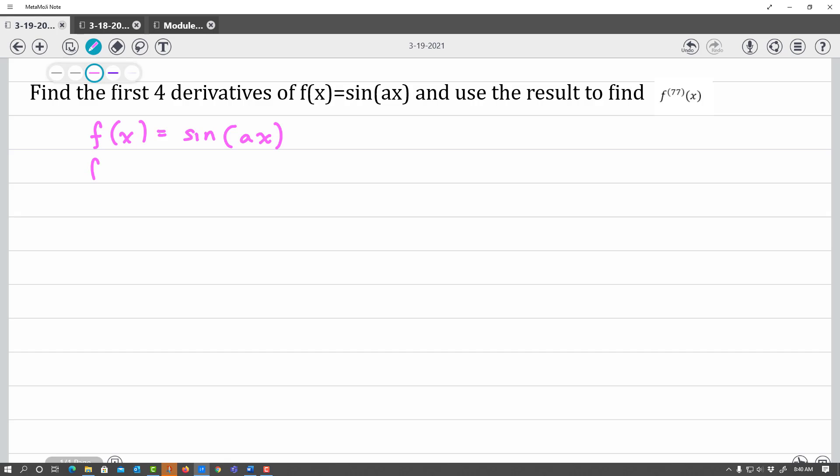When I take the first derivative, the derivative of sine is cosine, leave the inside alone, times by the chain rule, the derivative of the inside. The derivative of ax would just be a, so we rewrite this as a cosine of ax.